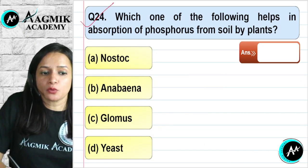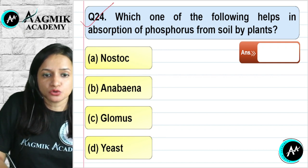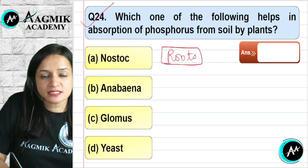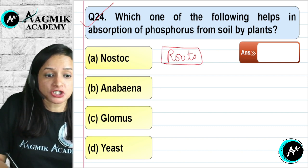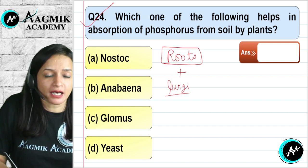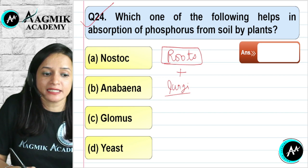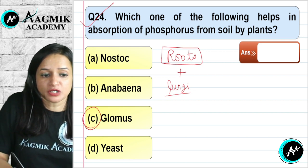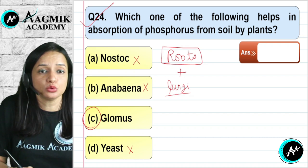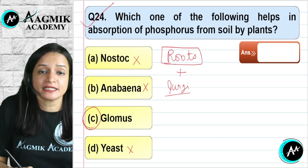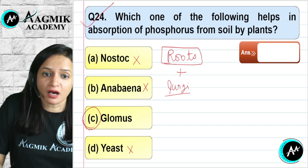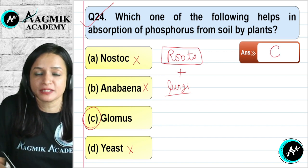Question number 24: Which organism helps in the absorption of phosphorus from the soil by the plant? Plant roots form a relationship with fungi called mycorrhizal association, which enhances phosphorus uptake. The most common fungal variety is Glomus. Nostoc and Anabaena are bacteria, and yeast is unicellular and does not form mycorrhiza. The correct option is C — Glomus.